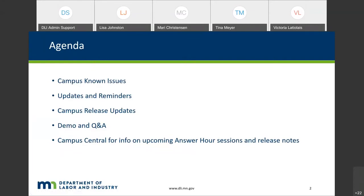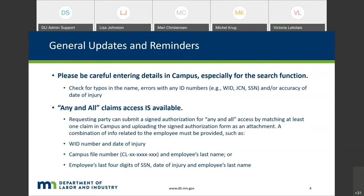At the outset, we're going to talk about some of the issues we've heard from you, what our processes are to address those, and then we'll have some general updates and reminders, discuss the CAMPUS releases that are in the works or have gone out in the last couple of weeks. It's absolutely critical that when you are entering details in CAMPUS, especially for searches, the information entered is accurate. That means making sure there are no typos in the name, and that any ID numbers — whether it's a WID, JCN, or social security number — are accurate.